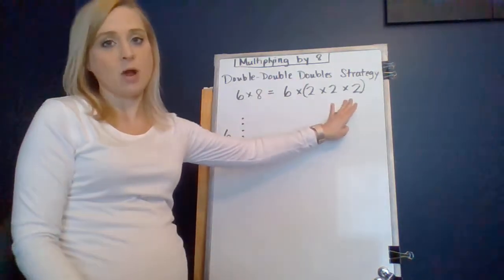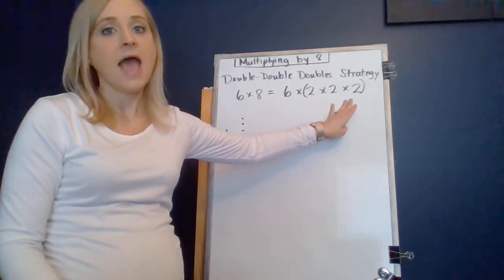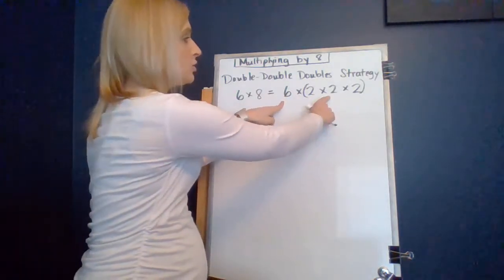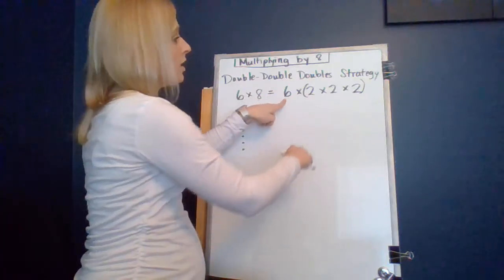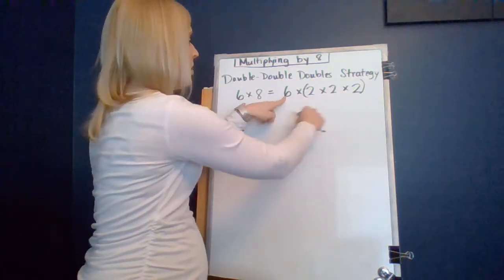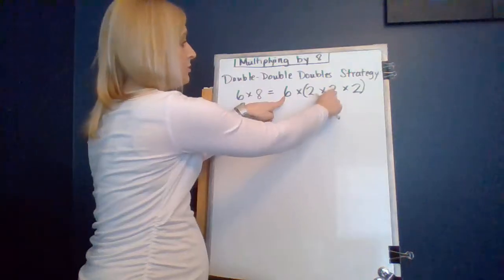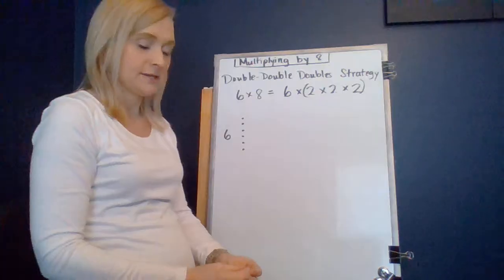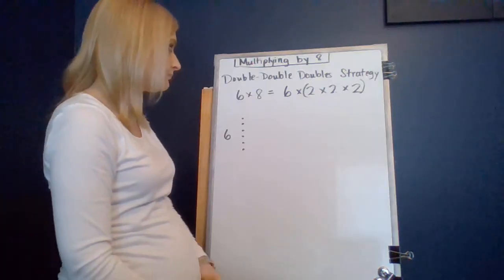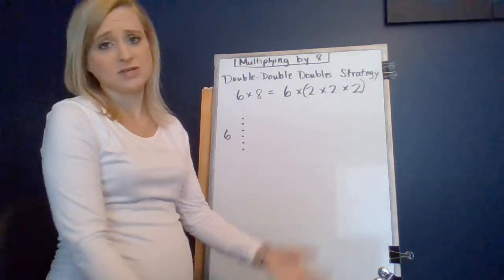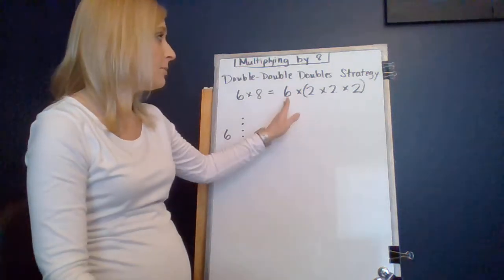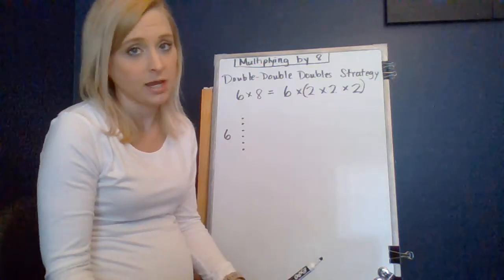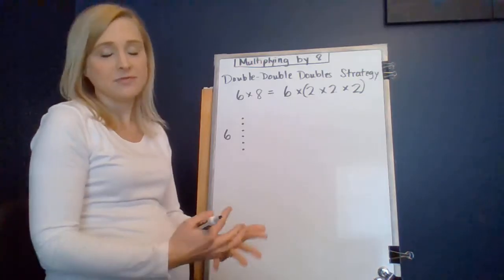And we know from the associative property that it does not matter how you multiply these numbers. You can start here and go six times two, then multiply by two, then multiply by two. Or you can start here and multiply by two, then multiply by two, then multiply by two. So order doesn't matter when you multiply — that's the associative property of multiplication. So we are just going to keep doubling six, and we're going to double it three different times. That's not the same as multiplying by three, so don't let that fool you.